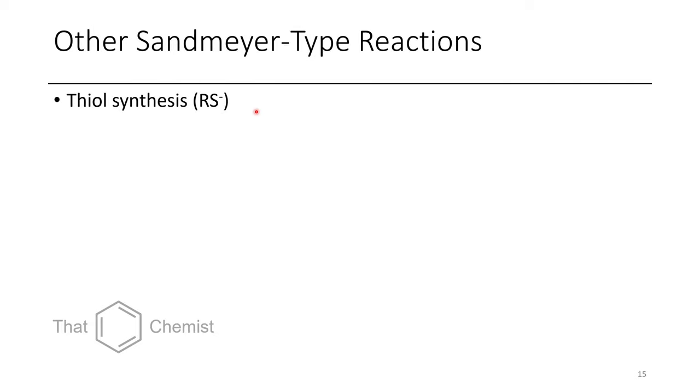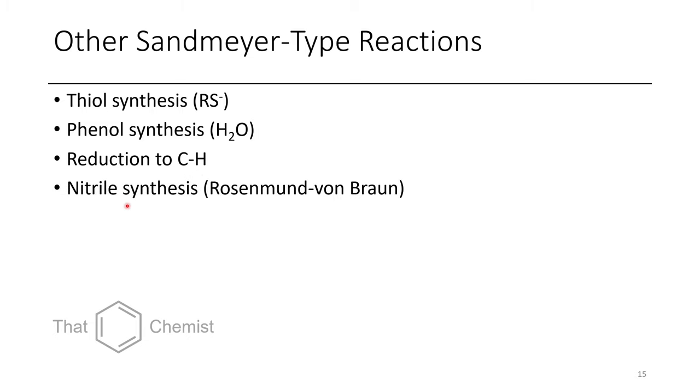So if you wanted to do other types of Sandmeyer reactions, you could make aryl thiols using sulfur-based nucleophiles. Alternatively, you could treat the diazoniums with water to get phenols. You could also reduce away the NH2 as a temporary protecting group, so that you get a CH. It's possible to synthesize nitriles, which is known as the Rosemann von Braun, or Braun if you're German, Braun synthesis. Sulfonyl chlorides can be made using sulfur dioxide, and borylation can occur using B2-pin2.